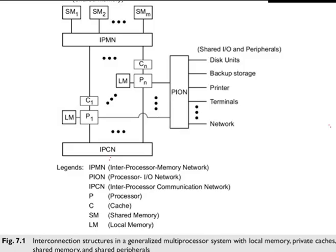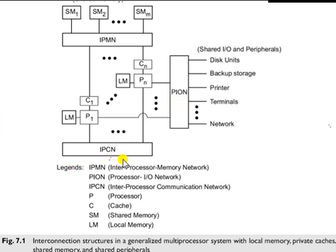Look at this figure — this is the representation of a generalized multiprocessor system. Each processor is attached to its own local memory, represented as LM, and also to a private cache. Multiple processors are connected to shared memory modules through an Inter-Processor Memory Network (IPMN). Processors share access to IO and peripheral devices through the Processor IO Network (PION). Direct inter-processor communications are supported by an optional Inter-Processor Communication Network (IPCN), instead of through the shared memory.